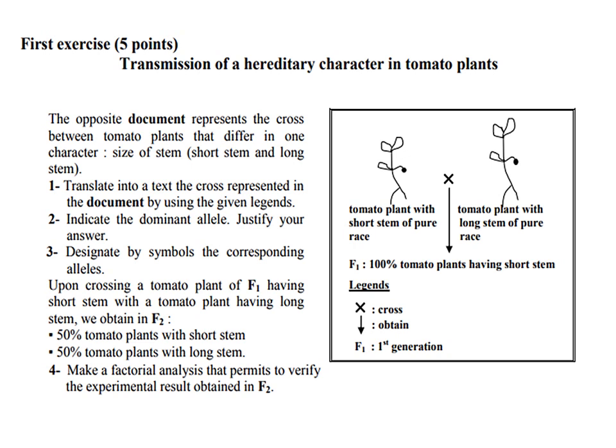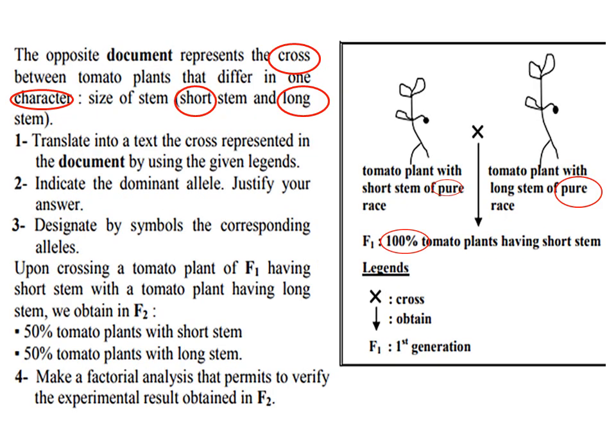Let's start with the first key term: character. In this exercise, character shows that one tomato plant has a short stem character while the other has a long stem character. Remember that character, characteristic, trait, and phenotype all have the same meaning. These phenotypes are determined by our genes, and these genes are inherited from our parents. We inherit chromosomes carrying genes from our parents, and according to these genes we express certain phenotypes. We're talking about autosomal transmission here.